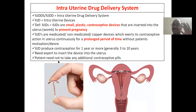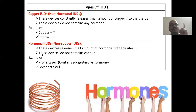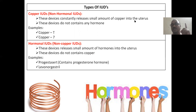Patients need not take any other contraceptive pills because this is a copper T. After insertion, it looks like this. There are two types of IUDs: one is copper-based, and another one is hormonal-based. Copper IUDs are called non-hormonal, whereas hormonal IUDs are called non-copper. Keep in mind. Copper IUDs constantly release a small amount of copper in the uterus and do not contain hormones. Examples are copper T and copper 7. Hormonal devices consist of hormones and release a small amount of hormones in the uterus; they do not consist of copper — hence called non-copper IUDs. Examples are progesterone and levonorgestrel.